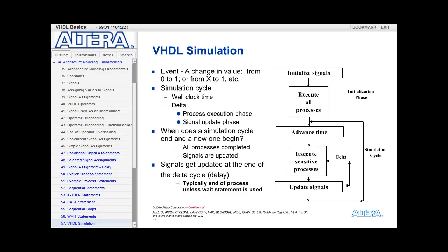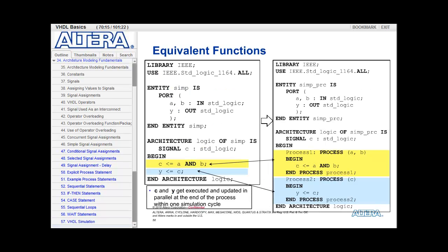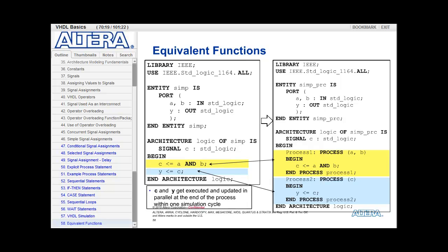Nothing else is changing, and then the simulation cycle advances and wall clock time advances. A simulation cycle ends when all processes are completed with their execution and all signals are updated. The big takeaway is that signals get updated at the end of the delta cycle — meaning at the end of the process, or if you have a wait statement in the process, once you hit a wait statement, that is when the signals in that delta cycle get updated. The new value of the signal may not be available at the next line in the process. When a signal gets assigned a value in an explicit process, it is scheduled to be updated, but it is not updated until the process ends.